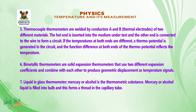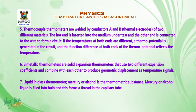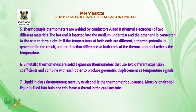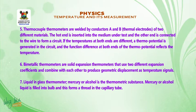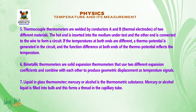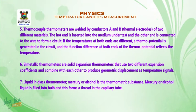In the thermocouple, one end is inserted into the medium under test and the other end is connected to form a circuit. If the temperature at both ends is different, a thermal potential is generated in the circuit. We also have the bimetallic thermometer, a solid expansion thermometer using two metals of different expansion coefficients. Additionally, there is the liquid-in-glass thermometer, in which mercury or alcohol serves as the thermometric substance.